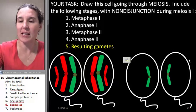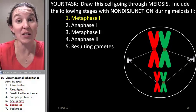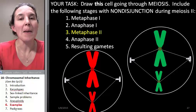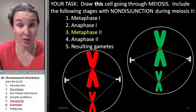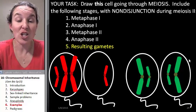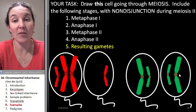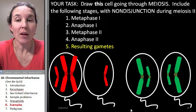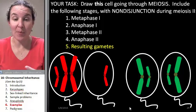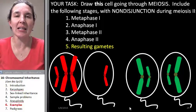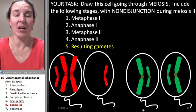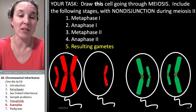Now, what's it going to look like if nondisjunction happens in meiosis II? That's a different situation. Meiosis I is normal, metaphase II is normal, but anaphase II doesn't happen right. We end up with just two gametes that are abnormal instead of all four of them being abnormal. Understanding meiosis lets you treat this as an application, not something to memorize — but you need to understand meiosis to start.